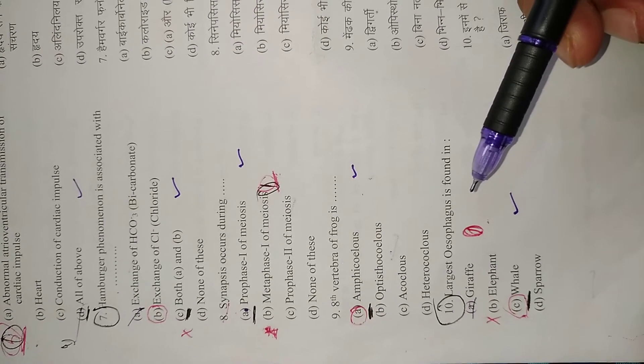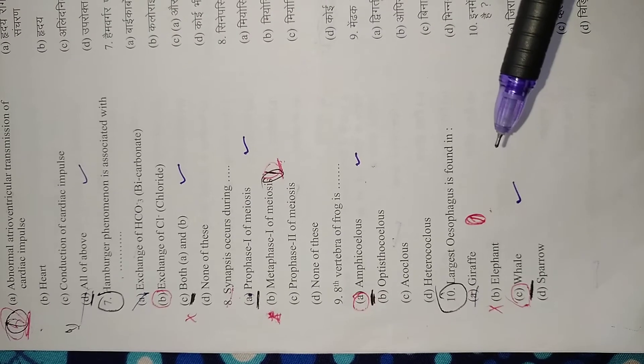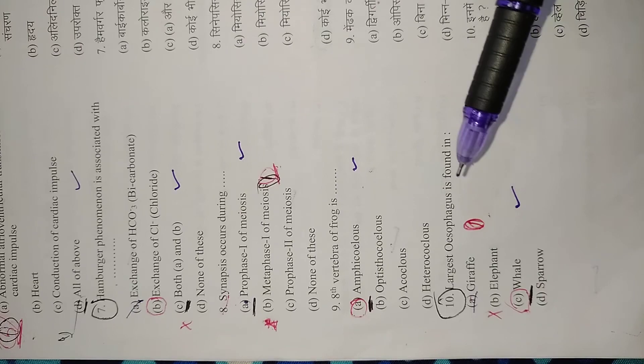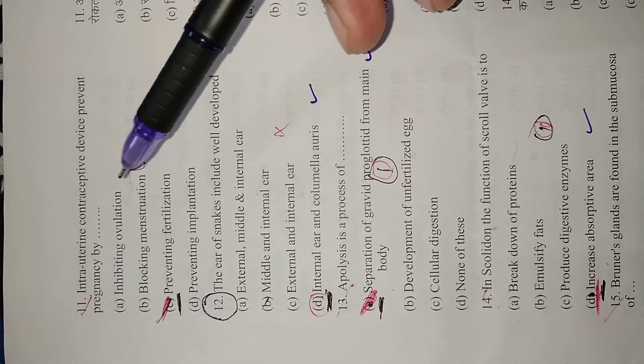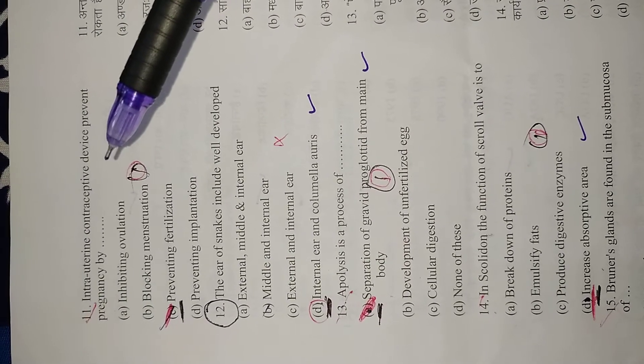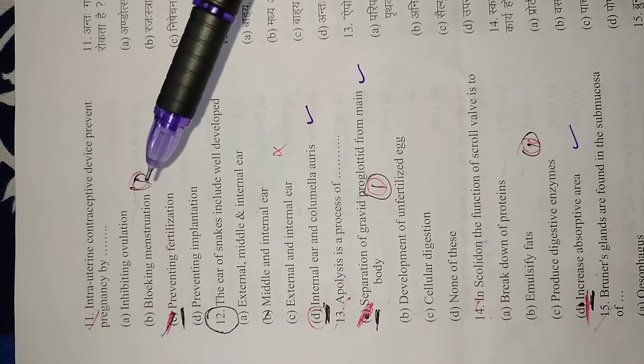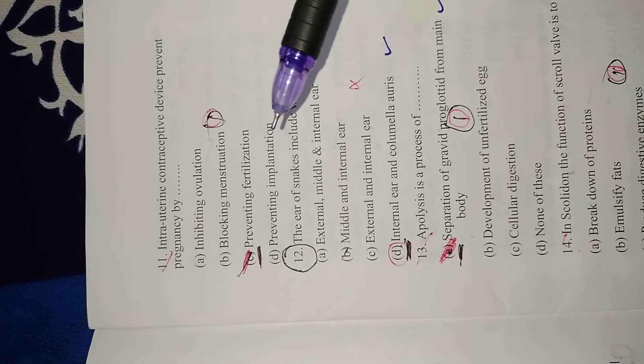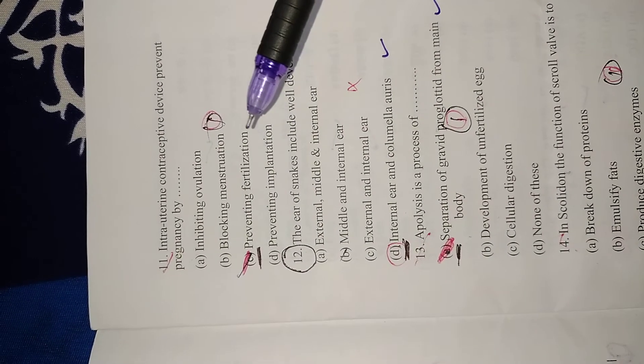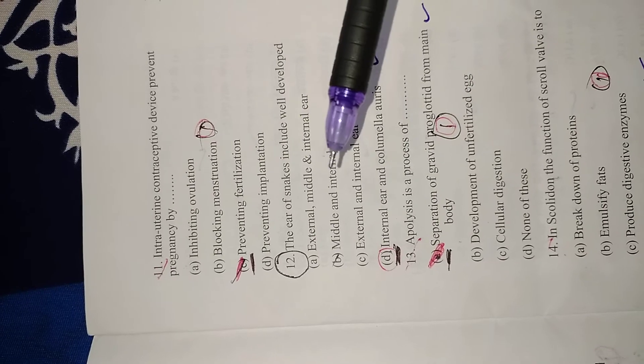There may be some misunderstanding or misprinting, but according to me the right option is A. Question 11: Intrauterine contraceptive device prevents pregnancy by? As you all learned, all of these are mechanisms of IUDs, but the official answer key says the right option is C. Question 12: The ear of snakes includes well-developed internal ear and columella auris.